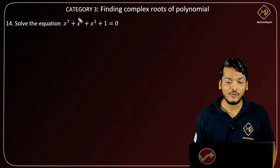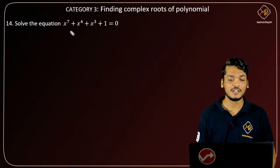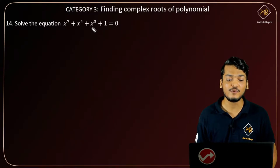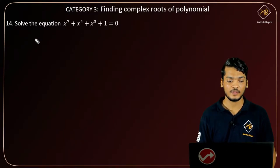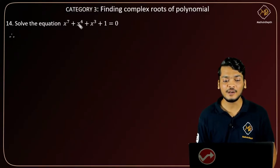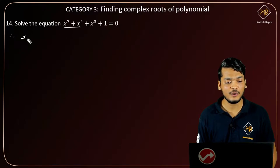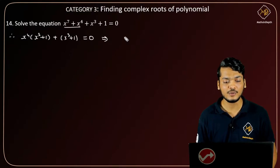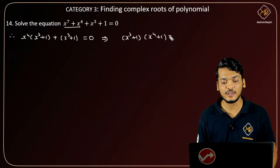In question number 14 of category 3, we have to solve the equation x raise to 7 plus x raise to 4 plus x cube plus 1 equals to 0. So in this equation, I'll take x raise to 4 common from this part, giving me x raise to 4 bracket x cube plus 1, and then x cube plus 1. This can also be written as x cube plus 1 into x raise to 4 plus 1 equals to 0.